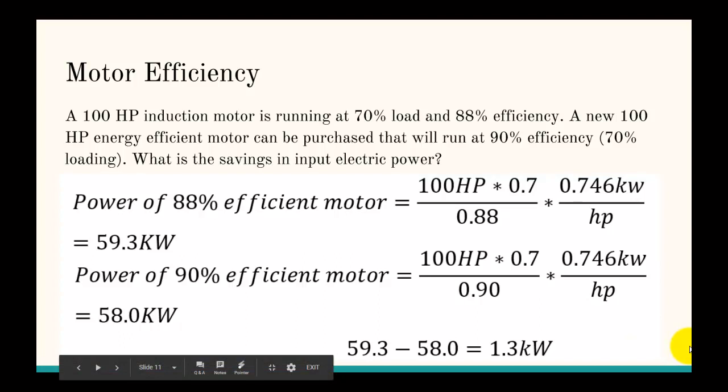Let's first look at a motor efficiency problem. A 100 horsepower motor is running at 70% load and 88% efficiency. A new 100 horsepower energy efficiency motor can be purchased that will run at 90% efficiency at the same 70% loading. What is the savings in input electrical power? This one's relatively easy. The only trick is that you want to make sure you take into account how much it's loaded, so that's what the 0.7 is here.